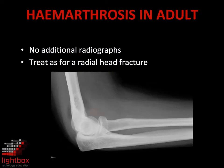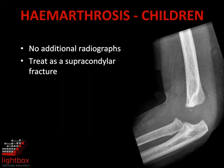Fractures around the elbow may be very difficult to visualise if minimally displaced. In the setting of trauma, if there are signs of a haemarthrosis, an occult fracture needs to be considered until proven otherwise. In an adult, this should be considered to be a radial head fracture, with clinical follow-up to reassess. In a child, this should be considered to be a supracondylar fracture, with clinical follow-up to reassess.